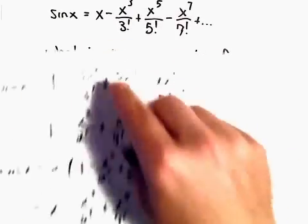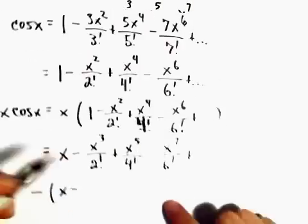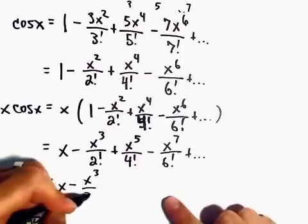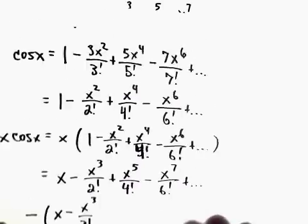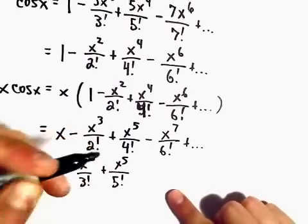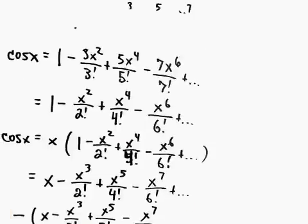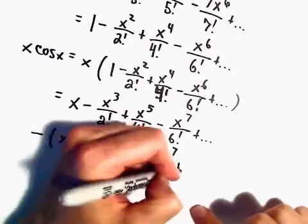Our series expansion for sine x is going to be x minus x to the third over 3 factorial, and then we said it was plus x to the fifth over 5 factorial minus x to the seventh over 7 factorial, etc.